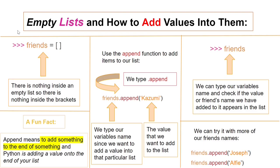As well as having values, lists can also be empty. Empty lists have nothing inside them. The reason we use empty lists is that we will later add items to them using the append function. For example, say you are starting a brand new school and have no friends yet — your list is empty. But as you make more friends you can add them to your list. I make a variable called 'friends' and assign it to an empty list. As a fun fact, append means to add something to the end of something.